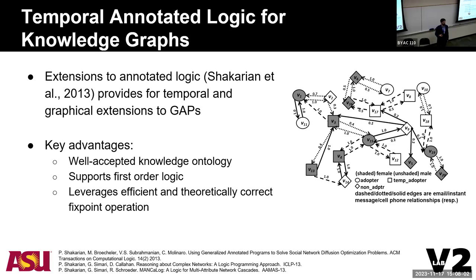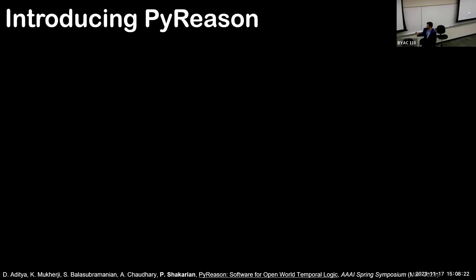There's been some extensions to this over the years, doing things like, can we add time to it? Can we add an underlying graphical structure to the logic? And the short story is we can do these things and still retain the desirable properties of annotated logic. So what we did is we took all of these ideas and we created an efficient Python implementation that we're calling PyReason.